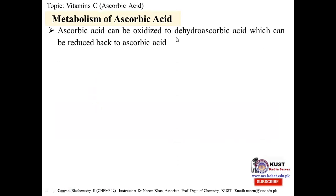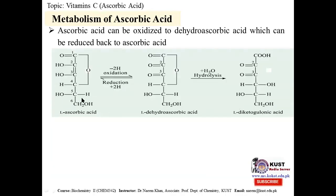Ascorbic acid can be oxidized to dehydroascorbic acid, which can then be reduced back to ascorbic acid. When ascorbic acid loses two hydrogen atoms from carbon number two and carbon number three, it is converted to dehydroascorbic acid. Those two hydrogen atoms can be donated to reduce other species, which is why ascorbic acid acts as a reducing agent.